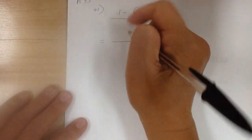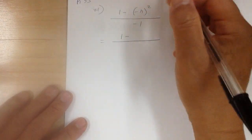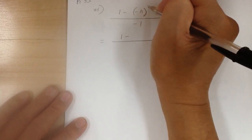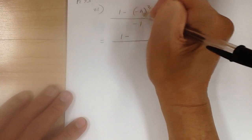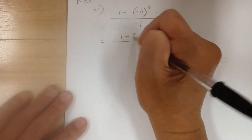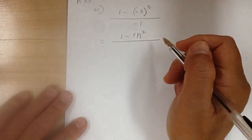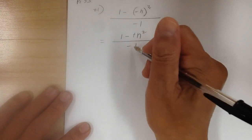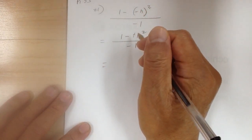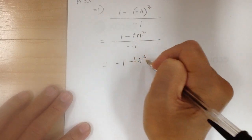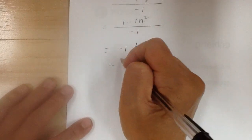You have 1 minus negative n squared over negative 1. First we have to do the exponent before anything else. Remember, the exponent is for what is immediately before it — so the exponent is before the parentheses too, meaning everything in the parentheses gets squared. So negative squared gives you positive, and n squared is just n squared. Then dividing by negative 1: 1 divided by negative 1 gives you negative 1, and negative n squared divided by negative 1 gives you plus n squared. And that's it.